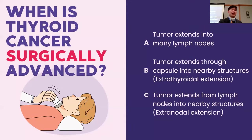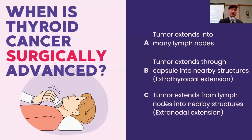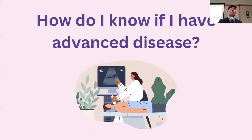How do we know when thyroid cancer is surgically advanced? Either the thyroid cancer itself can extend into the nearby lymph nodes, the tumor itself can extend into the thyroid capsule and into the things nearby the thyroid, or a tumor that invades into the lymph nodes can extend outside the lymph nodes into the structures they're touching. Fortunately, we detect these with thyroid ultrasound, which is really good at finding all of these things, so there are very few surprises by the time we go to the operating room.